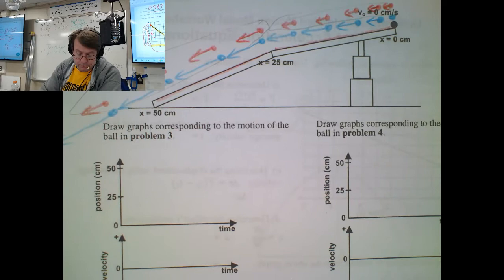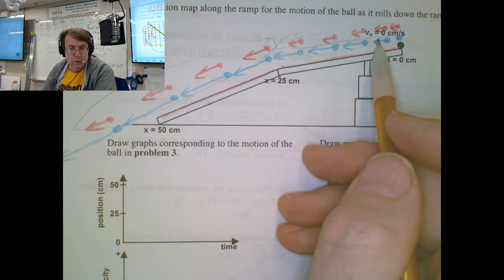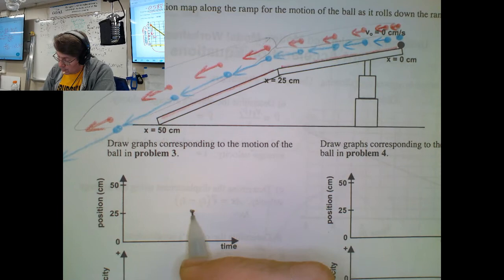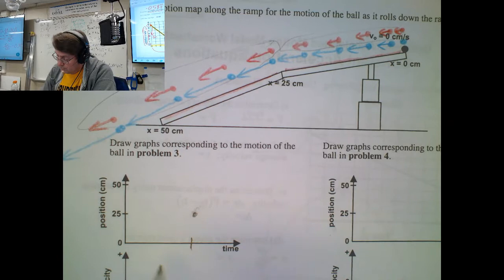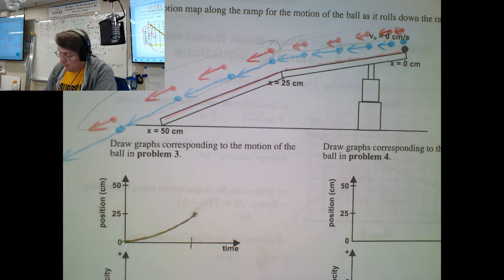So now for the part I messed up on, for the position graph, up until 25 centimeters, it would take a good part of the trip. It's moving slow. So it takes one, two, three, four, five seconds. So for a good part of the trip, it takes to get to the 25 centimeter mark. And so the curve would start out flat and gently climb to get up to 25 centimeters.